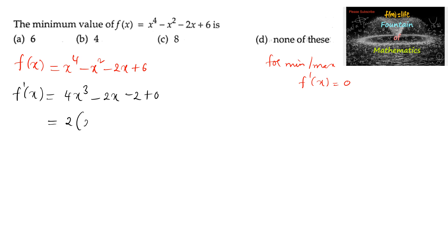So that is 2 taken in common: 2(2x power 3 minus x minus 1). And here we can see clearly that in this 2x power 3 minus x minus 1, the sum of coefficients